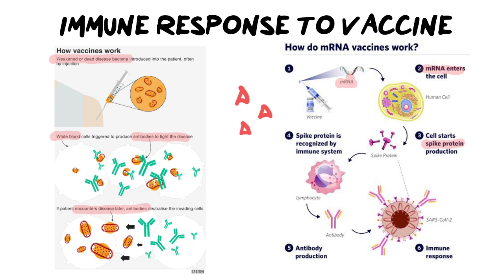Now what happens is that these little antigens are recognized by your immune system, which produces antibodies. And then if that particular virus does get into you, you now already have the antibodies present in your bloodstream that will attach to the spike proteins of this particular virus — which in this picture is COVID or SARS-CoV-2 — and now you have an immunological memory of it. It's two different ways that produce the exact same outcome.